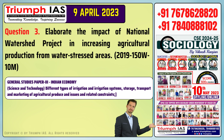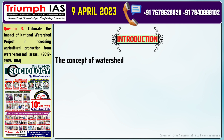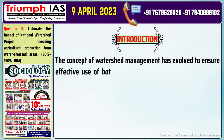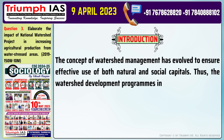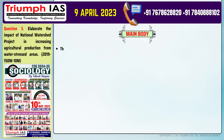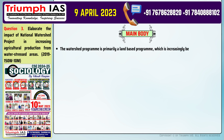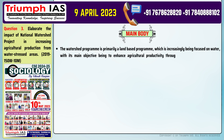Question number three: Elaborate the impact of the national watershed project in increasing agricultural production from water-stressed areas. For the introduction: The concept of watershed management has evolved to ensure effective use of both natural and social capitals. Watershed development programs include land, water, and human resources as essential components. Number one: The watershed program is primarily a land-based program, increasingly focused on water, with its main objective being to enhance agricultural productivity through increased in-situ moisture conservation and protective irrigation for socio-economic development of rural people.